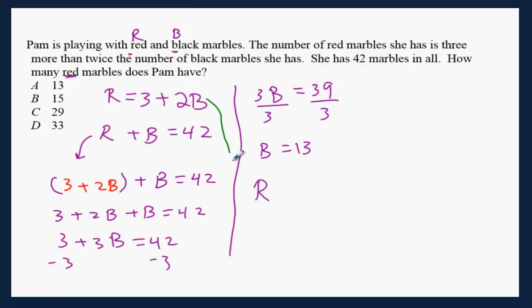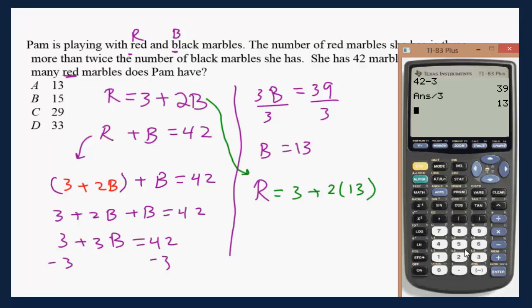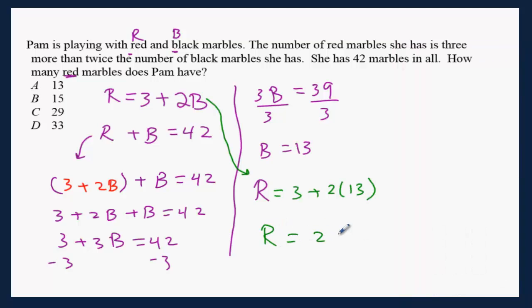The red marble equals 3 plus 2 times the black marble, which is 13. So that is 3 plus 2 times 13 equals 29. R equals 29, and that is choice C.